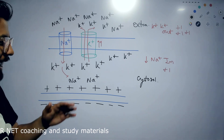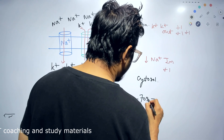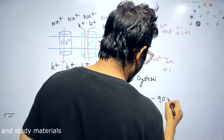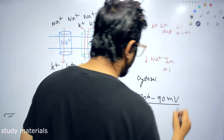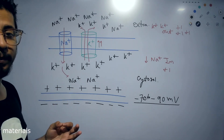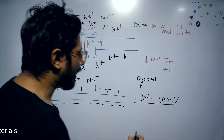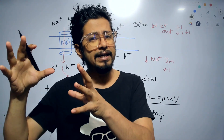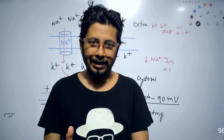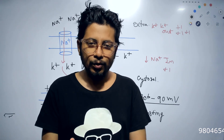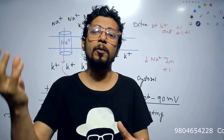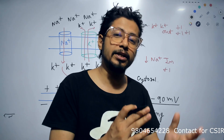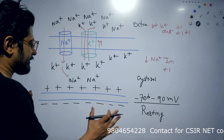This resting membrane potential corresponds to a voltage of minus 70 to minus 90 millivolts across the membrane. We call it 'resting' because the membrane is not being excited by any neurotransmitters or chemicals. There are gated channels — ligand-gated and voltage-gated — which can be triggered to open in response to a ligand or voltage, which we will study in the next lecture on action potential.